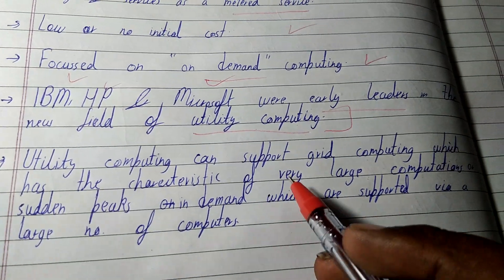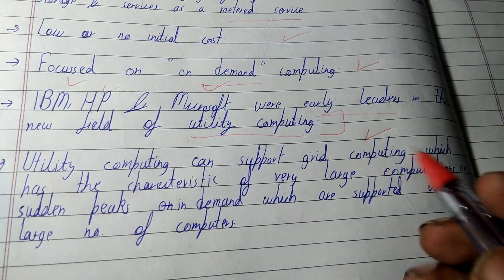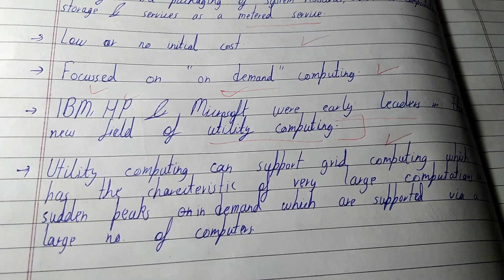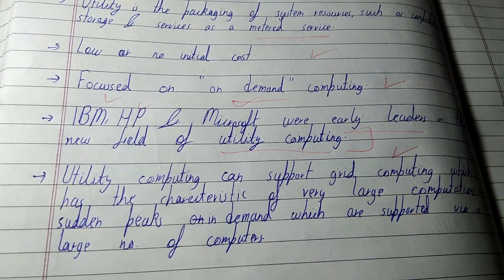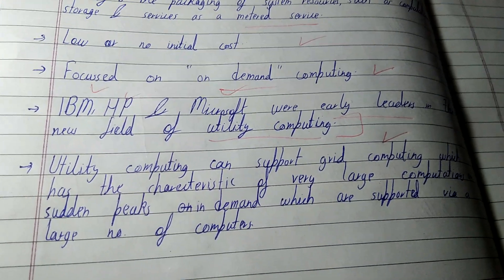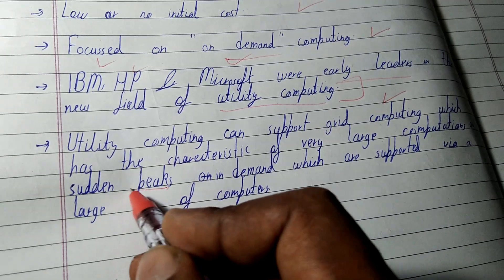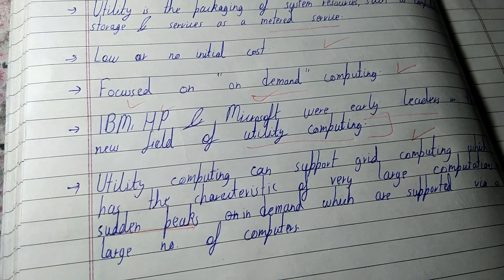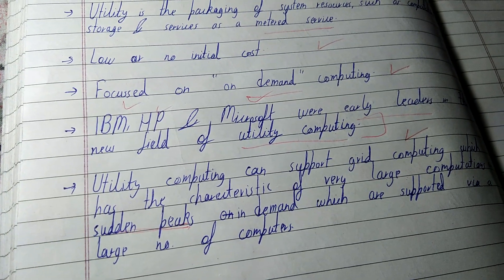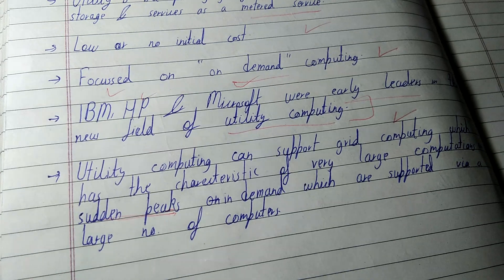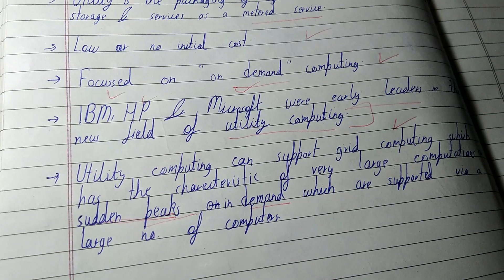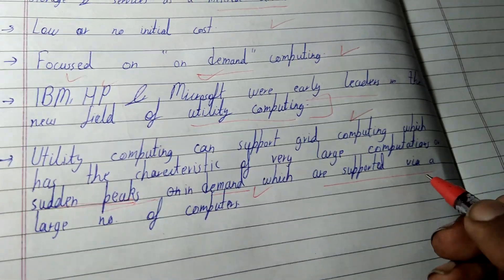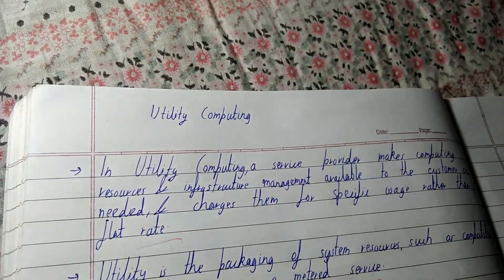Utility computing can support great computing with characteristics of large computers. With the help of grid computing, you can use utility computing across multiple computers. Whenever there is a sudden peak in demand — like a railway ticketing site or a social media site during peak hours — demand rises sharply and you need more computing resources. At that time, you can use utility computing and pay accordingly. It is supported via a large number of computers.